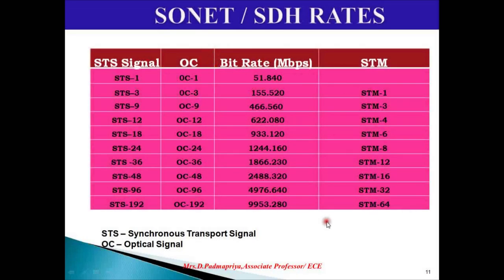This table gives SONET and SDH rates. As we have seen, STS-1 signal has a bit rate of 51.84 megabits per second. Similarly, the bit rates for STS-3, 9, 12, 18, 24, 36, 48, 96, and 192 can be calculated by multiplying 51.84 by the corresponding number. For instance, 51.84 multiplied by 3 gives 155.520 megabits per second.